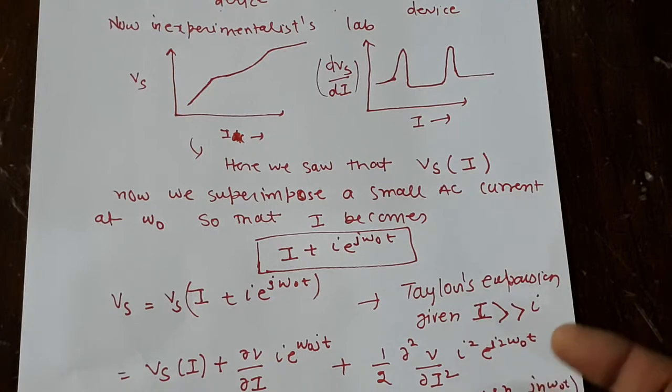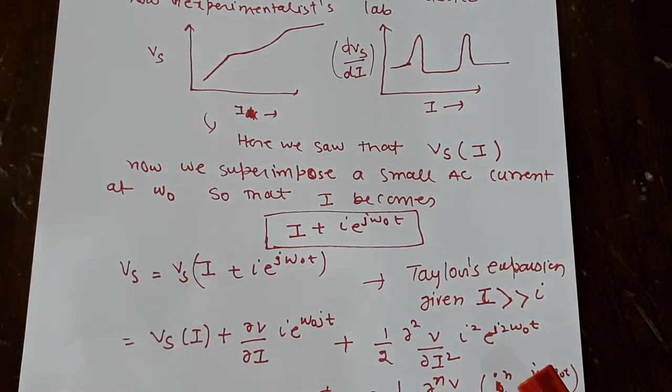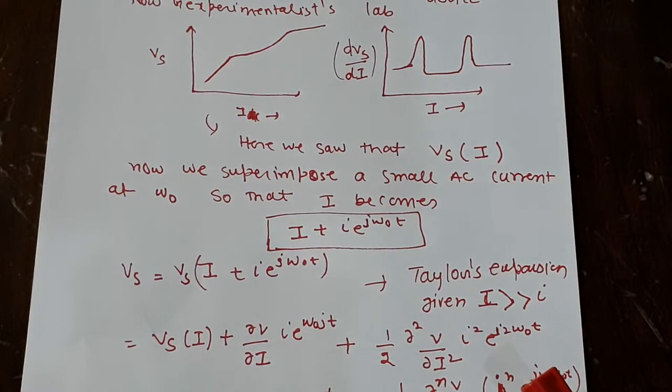Now for differential resistance or differential conductance, what one does is normally, they superimpose a smaller AC signal because lock-in amplifier locks at a particular frequency, it detects. So you superimpose a smaller AC signal at some frequency wherever you want to detect the signal to your major signal. For example, in this case, we are measuring V versus I and I_DC probably.